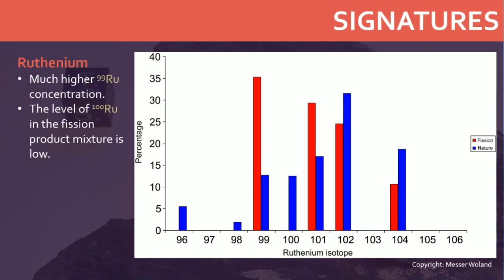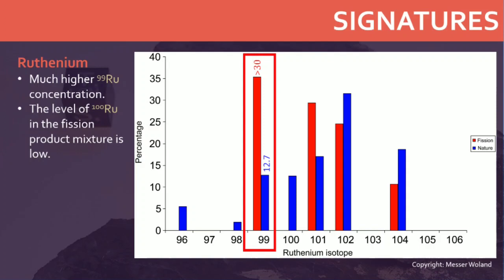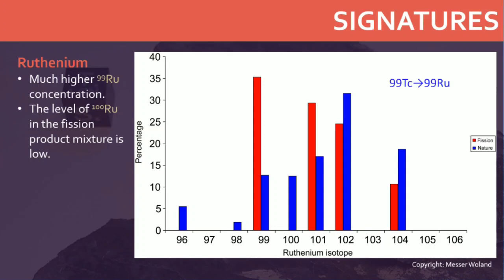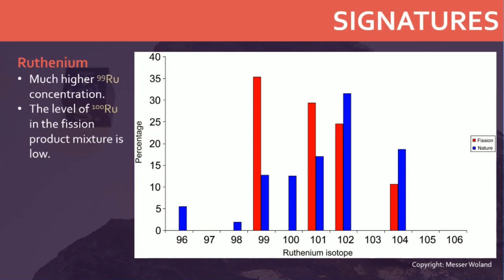Similar investigations into the isotopic ratios of ruthenium at Oklo found a much higher ruthenium-99 concentration than naturally occurring ruthenium — about 27–30% versus 12.7%. This anomaly could only be explained by the decay of technetium-99 to ruthenium-99. In the bar chart, the normal natural isotope signature of ruthenium is compared with that for fission product ruthenium, which is the result of fissioning of uranium-235. The fission ruthenium has different isotopic signatures. The level of ruthenium-100 in the fission product mixture is low because of a long half-life of 10^19 years for the molybdenum isotope. On the timescale of when the reactors were in operation, very little decay of ruthenium-100 would have occurred.